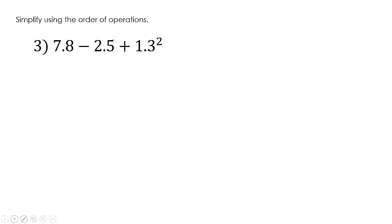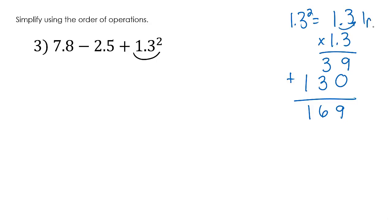Simplify using the order of operations. With this one, we know that we have to do the exponent first. So let's do that. 1.3 squared means 1.3 times 1.3. 3 times 3 is 9. 1 times 3 is 3. Add a 0. 1 times 3 is 3. 1 times 1 is 1. We're going to add straight down. So we have 9, 6, 1. But remember, we have to count our place values. So we're going to move 1, 2.